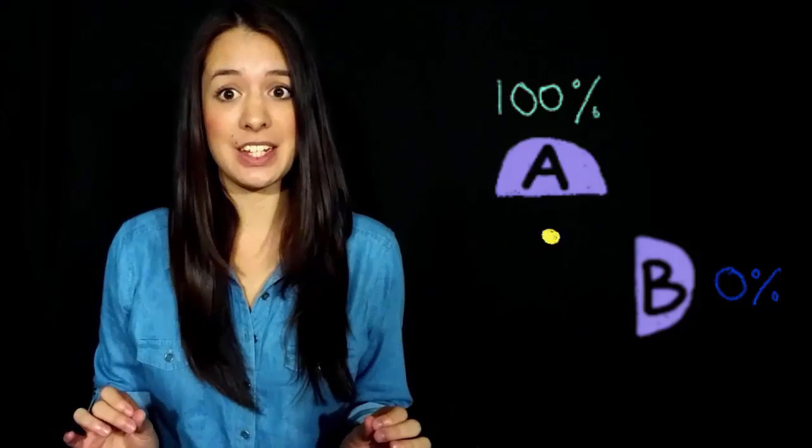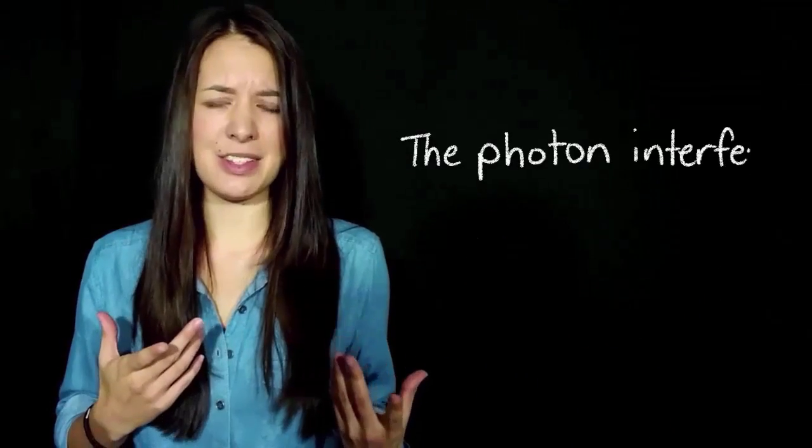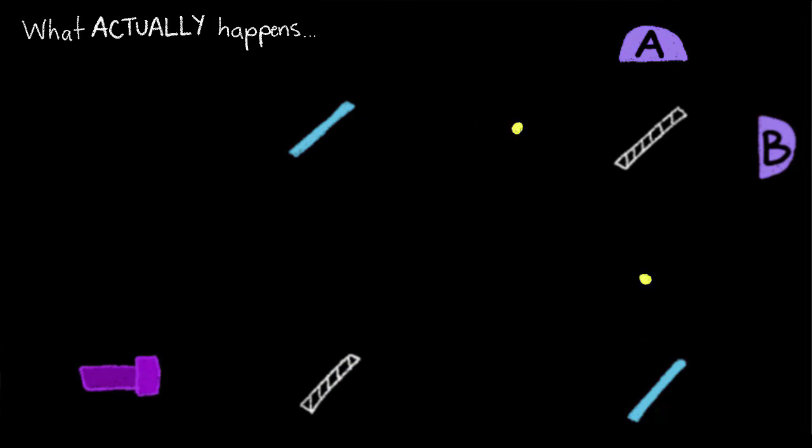So what's going on? The photon interferes with itself? Yeah! So the photon takes both paths and interferes with itself at the second beam splitter.